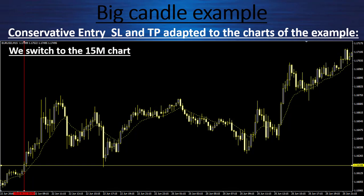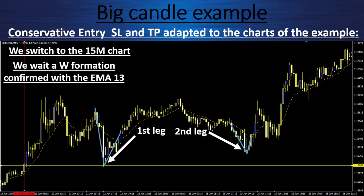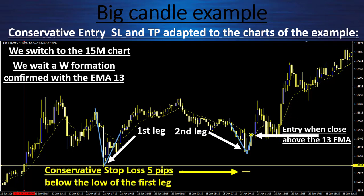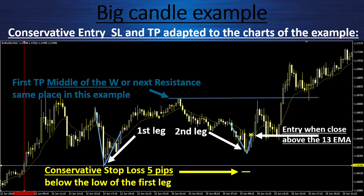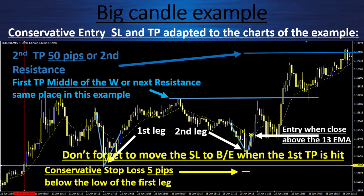For the conservative entry on the 15-minute chart, I wait for a W formation confirmed with the 13 EMA. I have the first leg of the W touching the level, then wait for a second leg near the level. When the candle closes above the 13 EMA, that is my entry point. My stop loss is five pips below the first extreme leg. My first target profit is the middle of the W or the next resistance — in this example, the same place. My second target profit is 50 pips or the second resistance. Don't forget to move the stop loss to break even when the first target profit is hit.